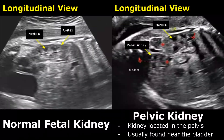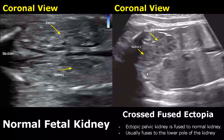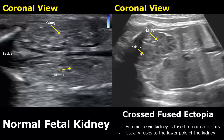In a pelvic kidney, the kidney will be found in the pelvic region, usually around the bladder. Here you can see the kidney above the bladder. It may also be fused with the lower pole of the normal kidney — this condition is called crossed-fused ectopia. Here you can see the fusion of two kidneys.